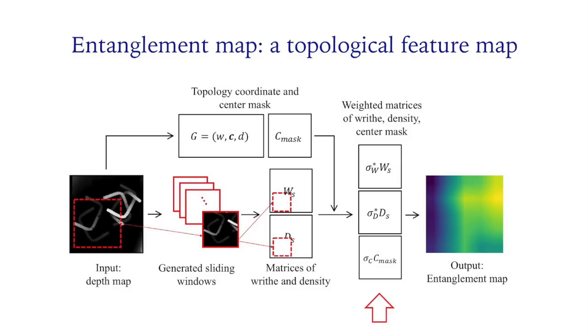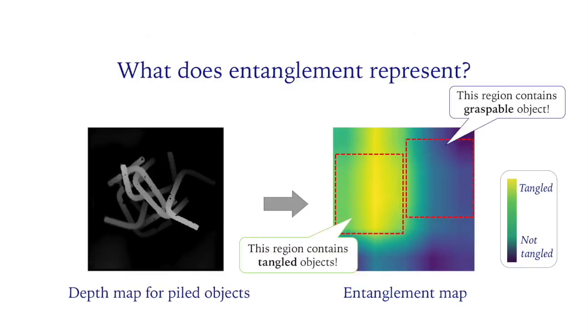Finally, we add this weighted matrix, resize it, and execute a bilinear interpolation to obtain final entanglement map. The entanglement map represents which region contains entangled parts and which does not.